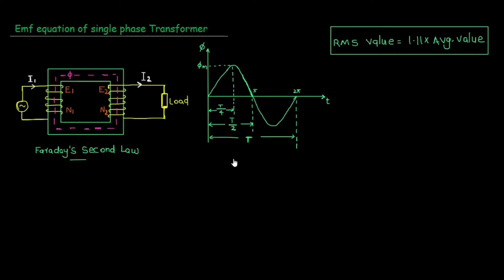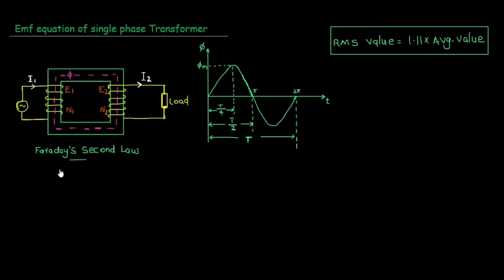We learn from the working of the AC supply. We look at the primary winding and the current flow, which induces a flux. By Faraday's second law, the induced EMF is directly proportional to dφ/dt — that is, the change in flux.